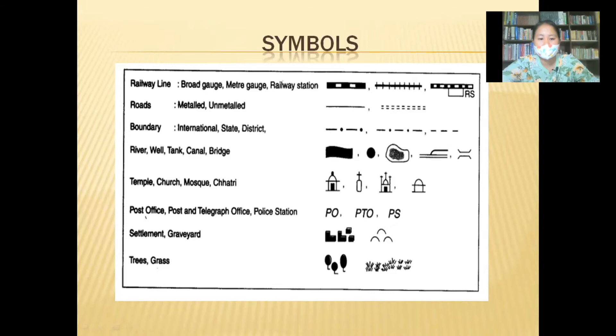Once we are familiar with these symbols, we can understand a map more easily. For example, symbols for post office, post and telegraph, and other map symbols help us read maps faster.